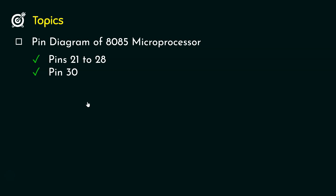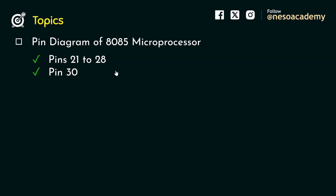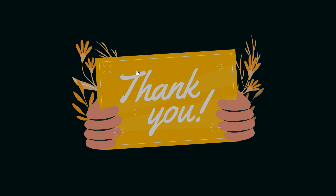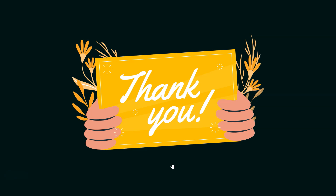So in this session, we covered pins 21 to 28, which are specifically used to send out the higher-order byte of the 16-bit address. We also learned about pin 30 — the Address Latch Enable pin — which helps peripherals understand whether pins 19 to 12, that is D7 to D0, are carrying the low-order byte of the 16-bit address or they are carrying data. In the next session, we are going to learn about the remaining pins of the 8085 microprocessor. Thank you all for watching.